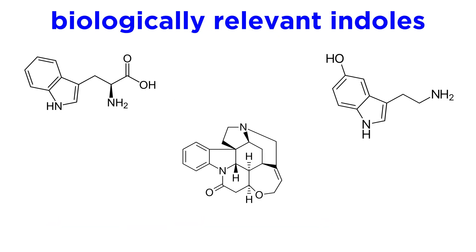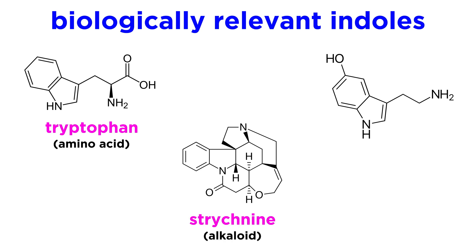Here are some examples of biologically relevant compounds featuring indoles, such as tryptophan, an amino acid; strychnine, an alkaloid found in certain plants; and serotonin, a neurotransmitter. Due to their prevalence in nature, their synthesis has been the object of much attention.